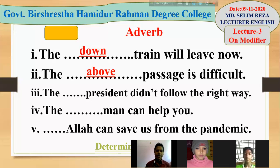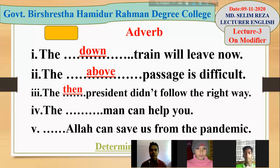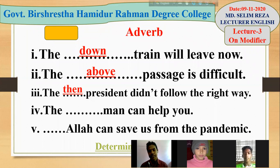Then we find: 'The ___ president didn't follow the right way.' We have to use an adverb here — 'the then president.' 'Then' is an adverb of time; it indicates a time. So it takes place before the very noun 'president' and gives additional information about 'president'. So it is called an adverb used as premodifier.